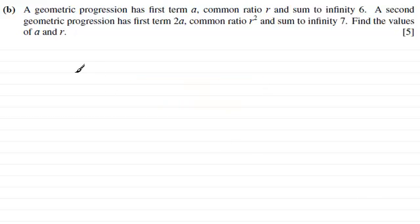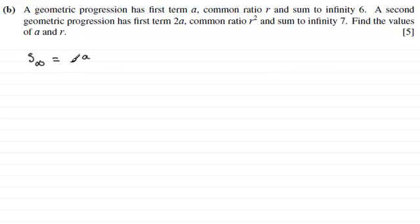What we need to be familiar with is the sum to infinity of a geometric progression. You can see many tutorials on this on my website. The sum to infinity is given by the first term a, all divided by 1 minus the common ratio r. And this is only true if the common ratio lies between minus 1 and 1.